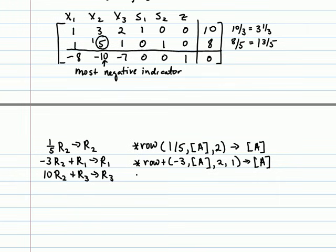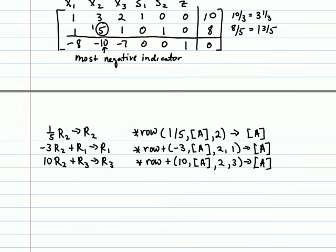The third operation would be times row plus 10, use matrix A, multiply 10 by row 2, add that into row 3, and store that into matrix A. After performing these operations, either by hand or by using the row operations of our calculator, we should get the following tableau.